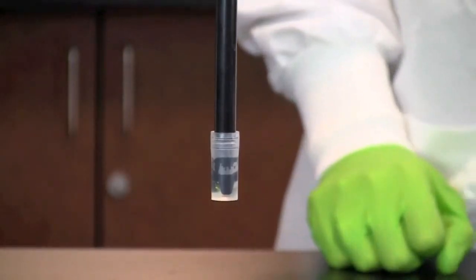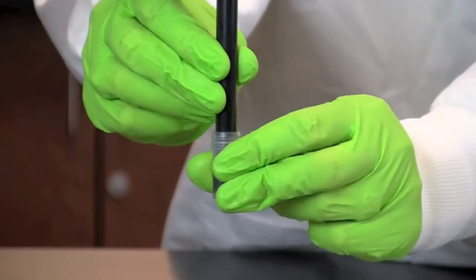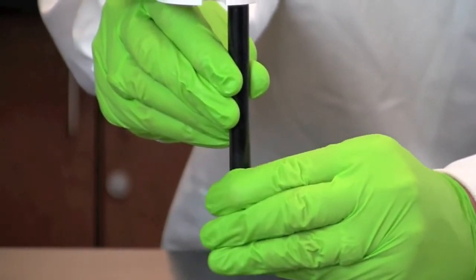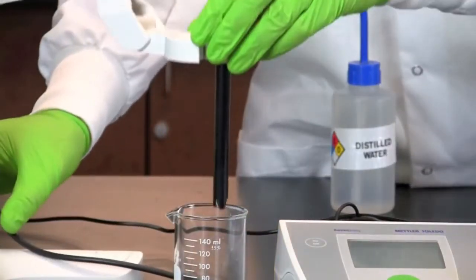The first step in using a pH meter is to remove the protective cap from the electrode. The electrodes of the pH meter need to be stored properly, capped, and immersed in a storage solution to prevent them from drying out.